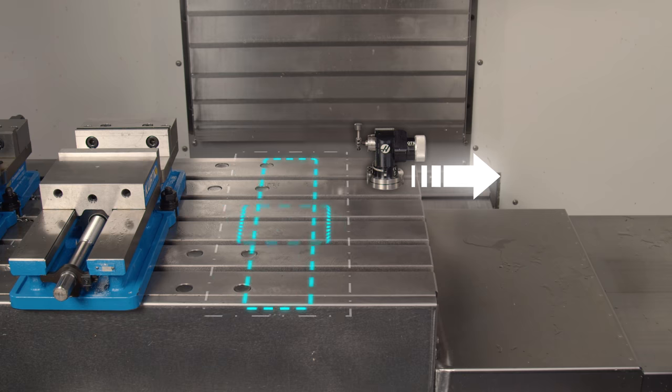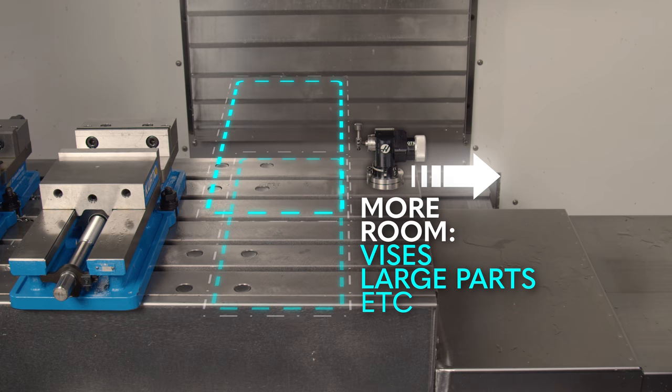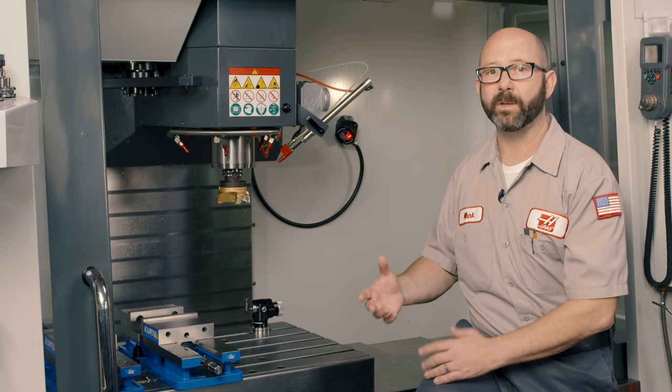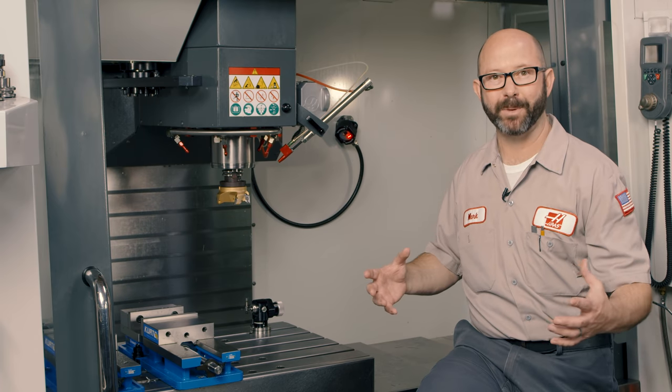And this is going to give us more room on the table for stuff. For vices, for larger parts, that kind of thing. Why did you buy a VF3 in the first place? As opposed to a VF2? Probably for the extra travel, right? The extra space.